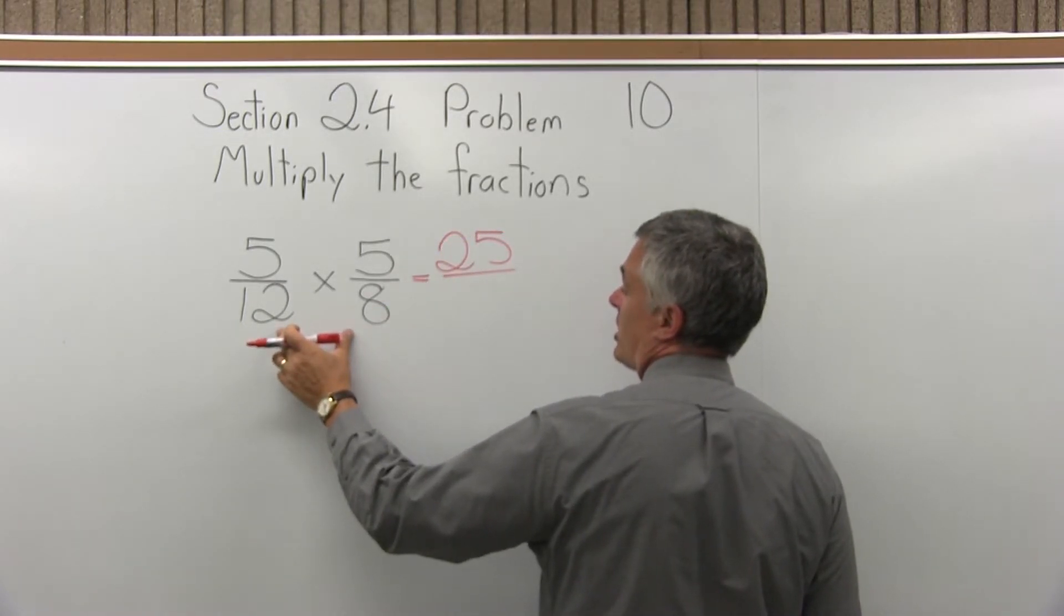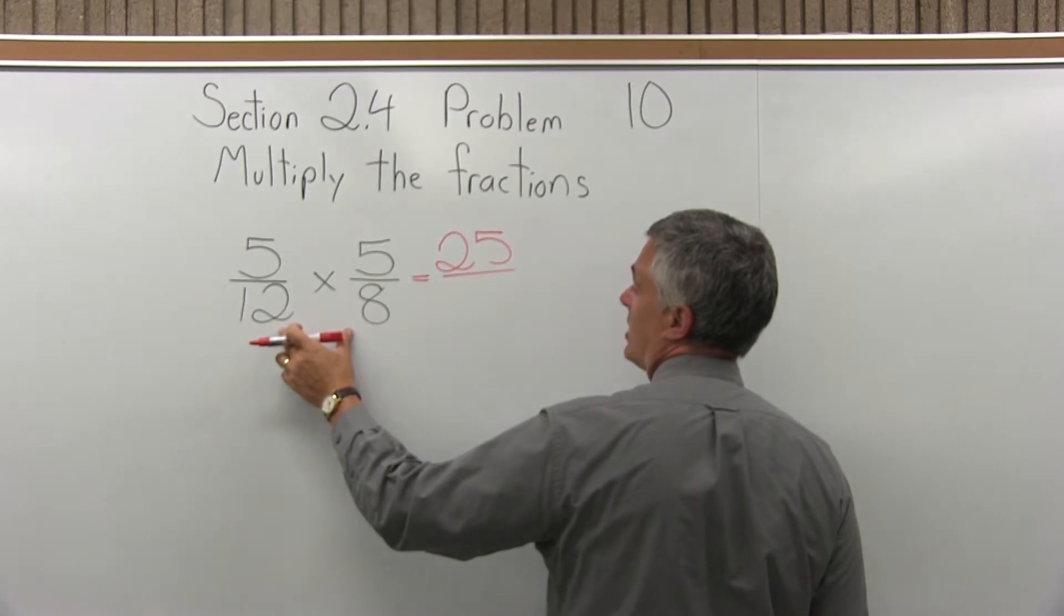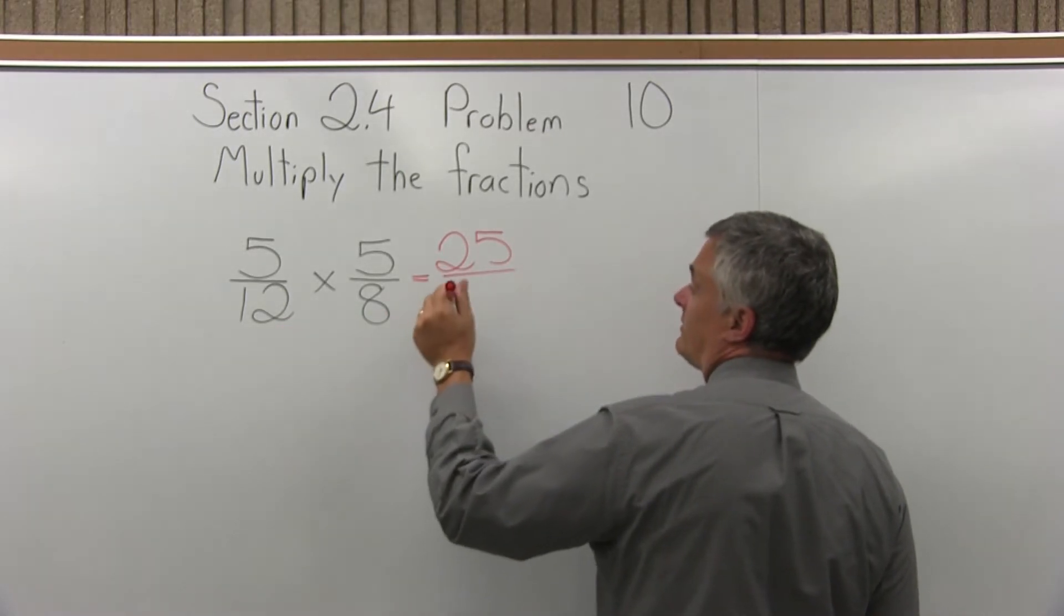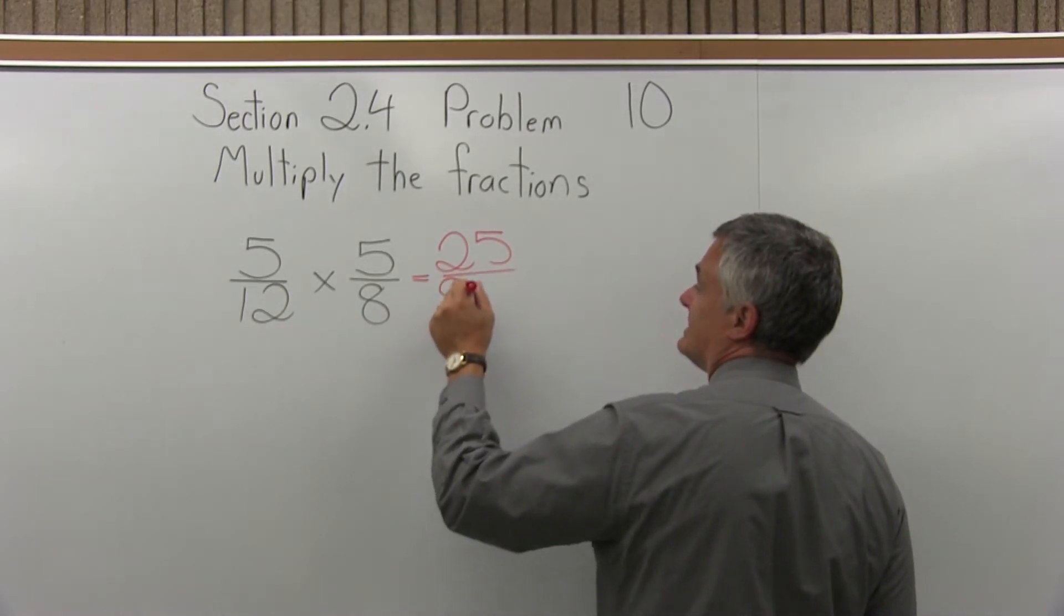And then bottom times bottom or denominator times denominator, which would be 12 times 8. 12 times 8 is 96.